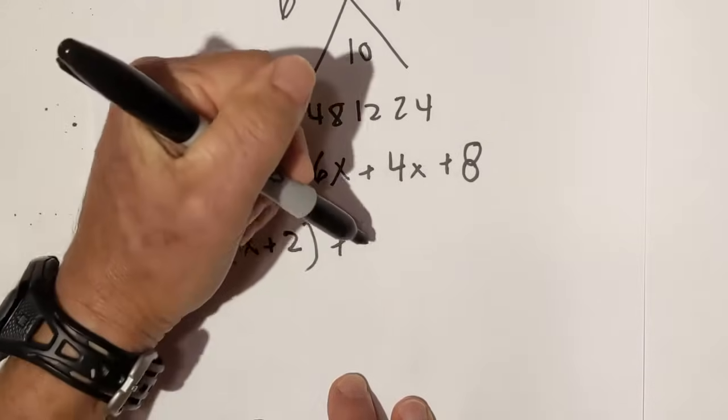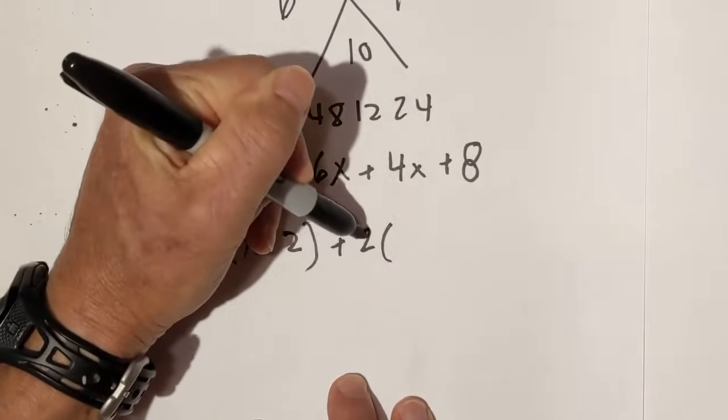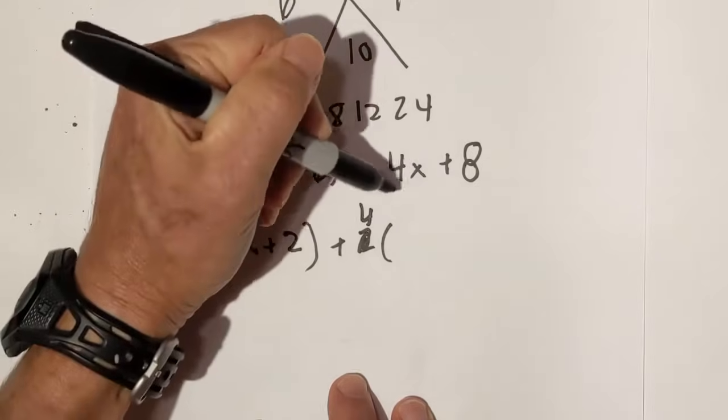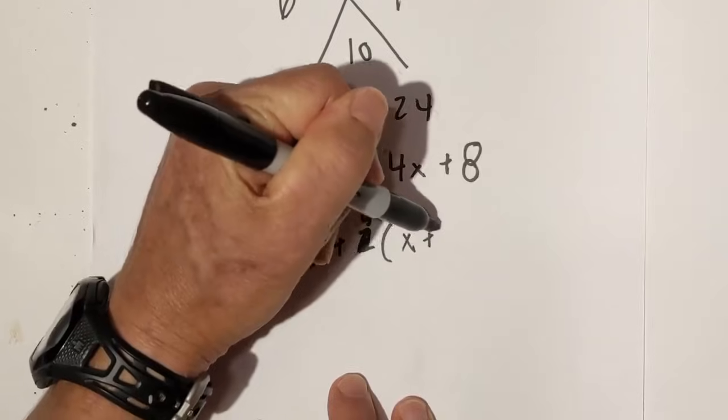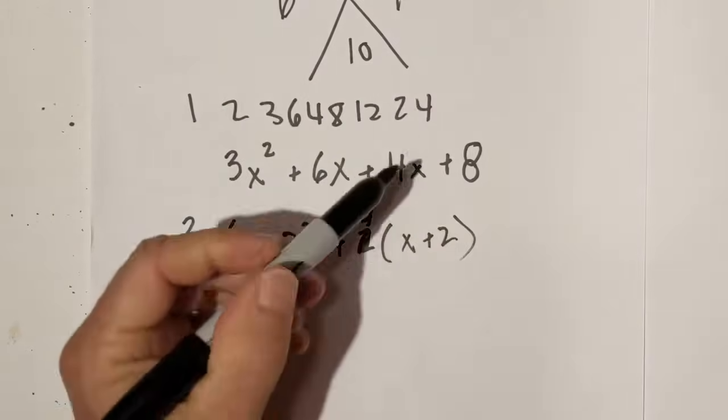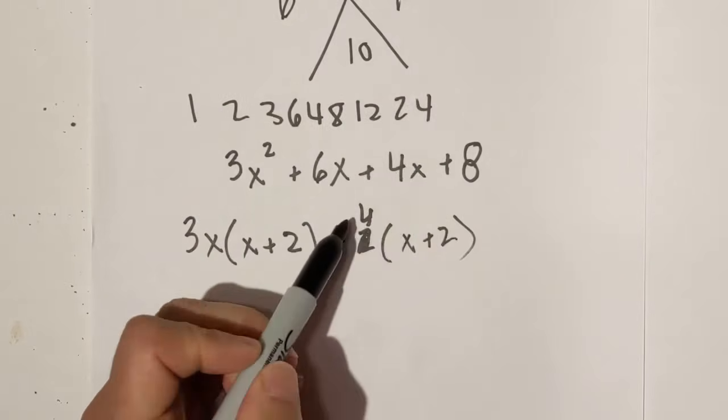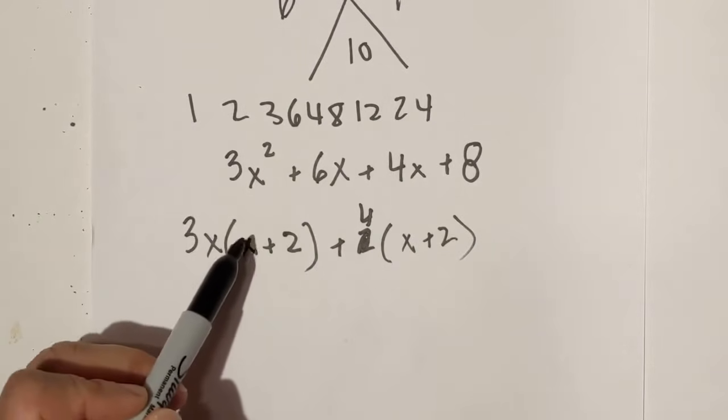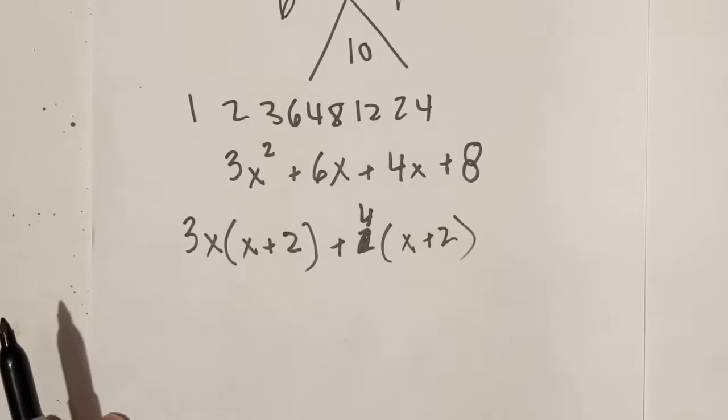When I bring out the greatest common factor, then over here it looks like we have 4. So that's going to give us x plus 2, because 4 times x is 4x, 4 times 2 is 8, 3x times x is x², 3x times 2 is 6x.